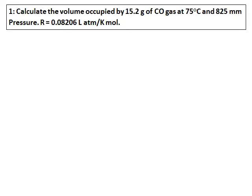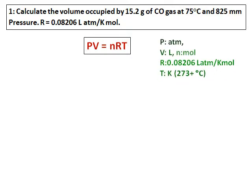Calculate the volume occupied by 15.2 grams of carbon monoxide gas at 75 degrees celsius and 825 mm pressure. The value of R is also given. So the equation I am going to use is PV equals nRT. Point to be noted is, P should be in atmosphere, volume should be in liters, n in moles, and R we are going to use 0.08206 and temperature should be converted to kelvin.